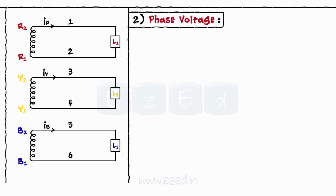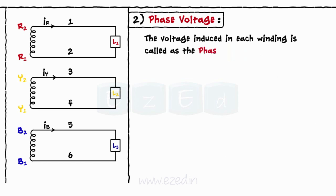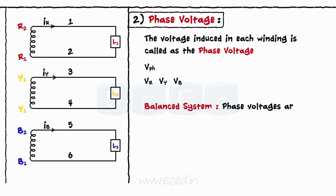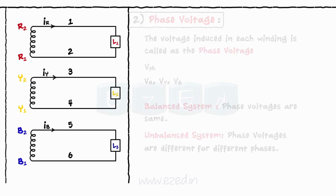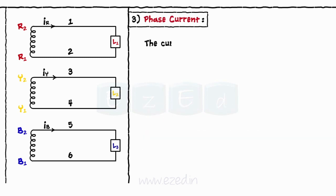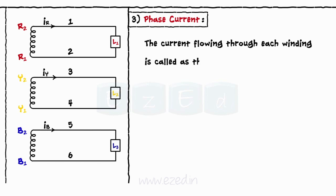The next term is phase voltage. The voltage induced in each winding is called the phase voltage, represented as Vph. Thus we have phase voltages as Vr, Vy, and Vb. For a balanced system, all phases have equal phase voltage. For an unbalanced system, the phase voltages are different for each phase. The current flowing through each winding is called the phase current Iph. Thus the phase currents are Ir, Iy, and Ib.